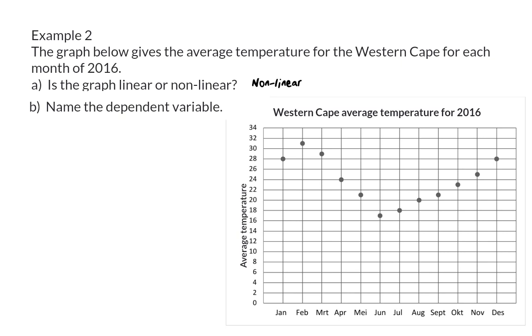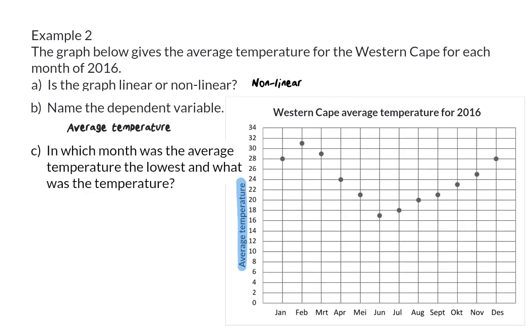Question B: Name the dependent variable. The dependent variable will always be on the vertical axis, so in this case, that will be the average temperature. Question C: In which month was the average temperature the lowest, and what was that temperature? Here, we are looking for the minimum point. And in this case, we can see that that minimum temperature happened in June, and when we read on the vertical axis, that temperature was 17 degrees.